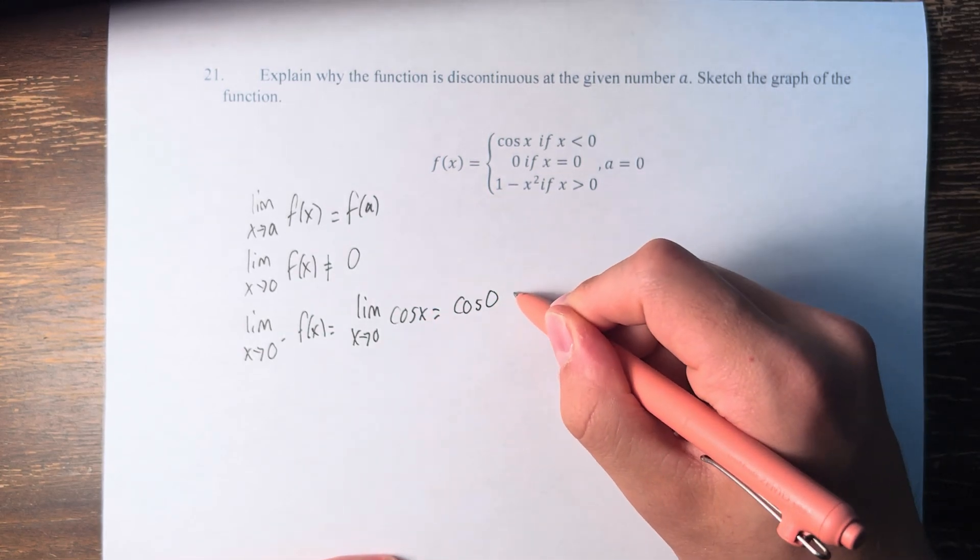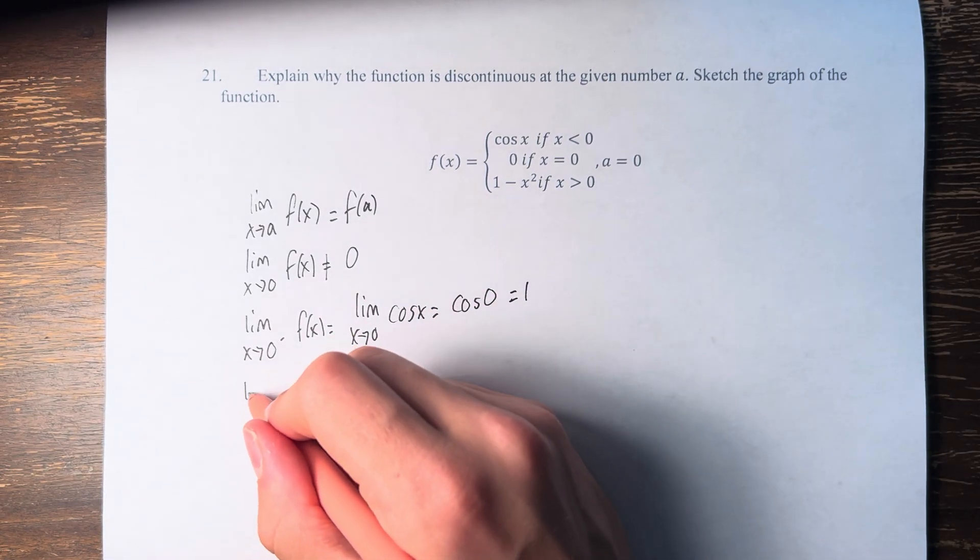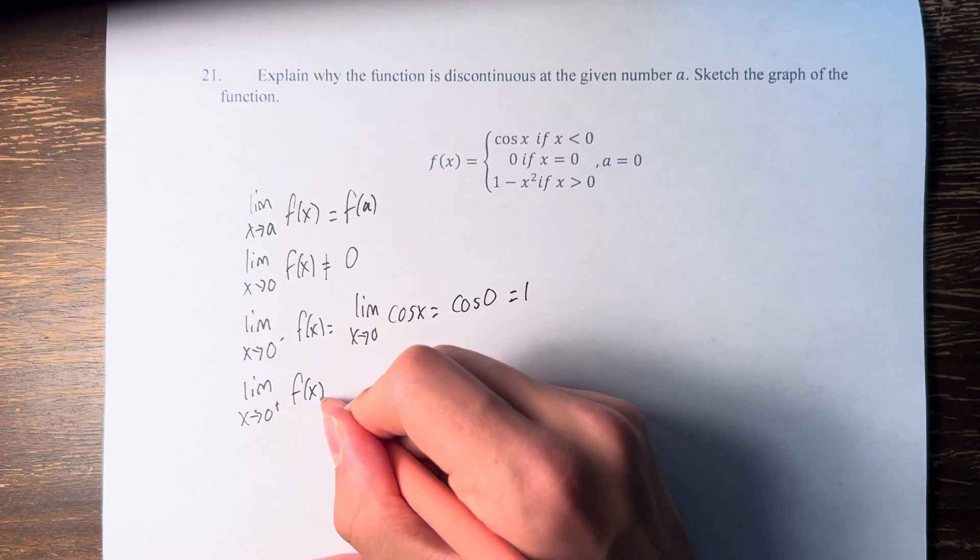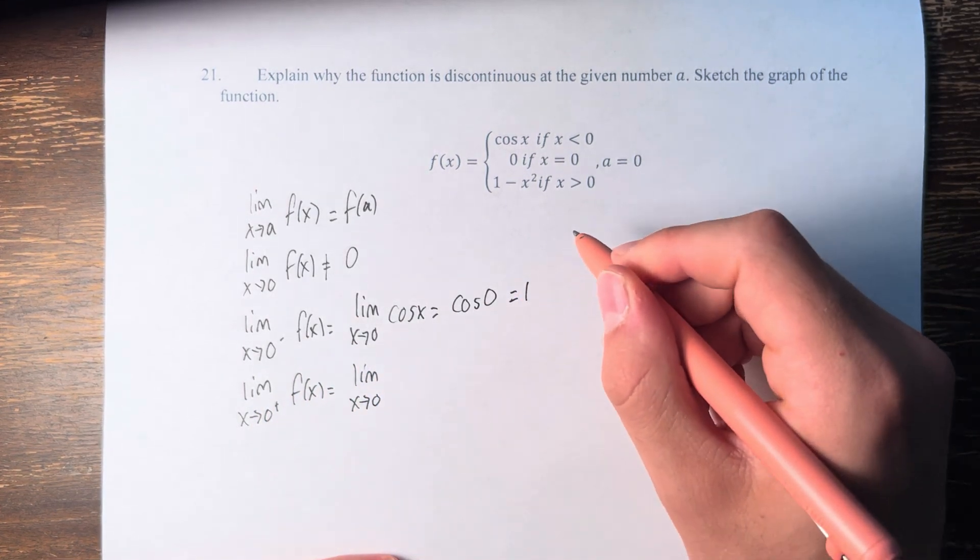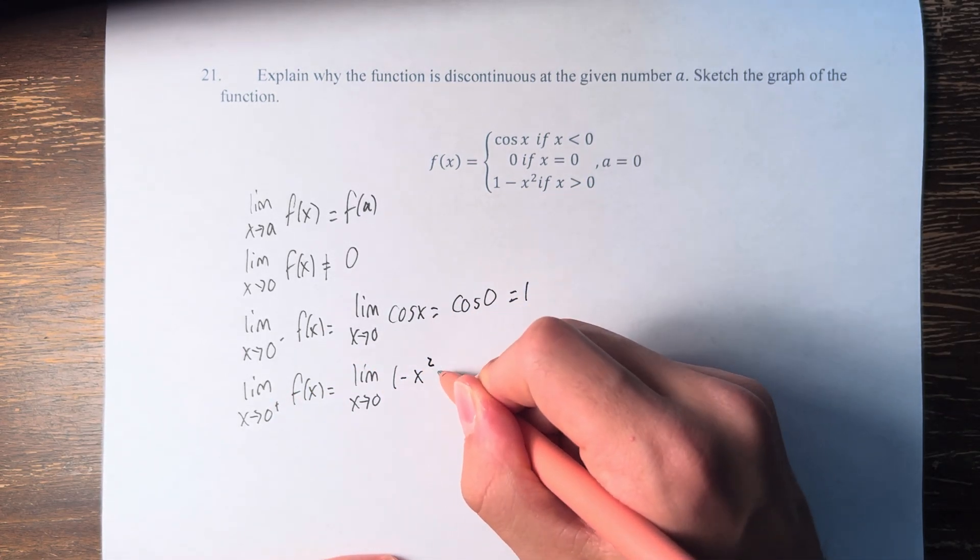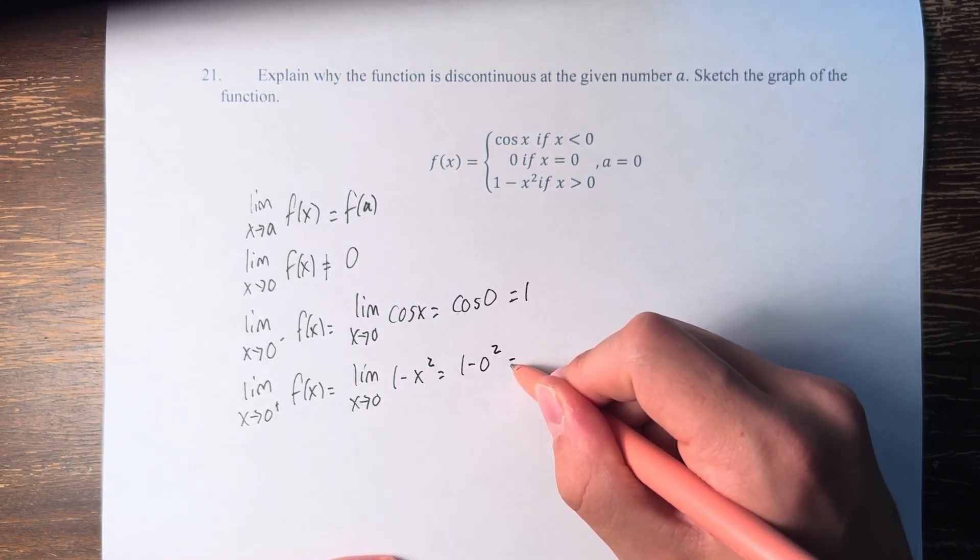So this is cosine of 0 which is 1, and the limit as x approaches 0 from the right is the limit as x approaches 0 of values greater than 0. So that's 1 minus x squared, which is 1 minus 0 squared, which is 1.